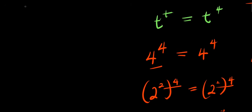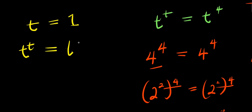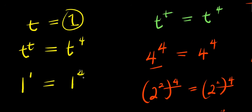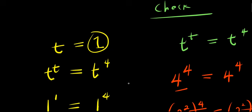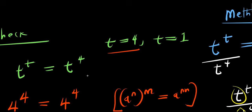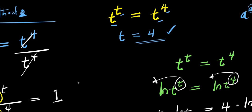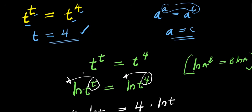Checking t equals 1: we have 1 to the power of 1 equals 1 to the power of 4. Now 1 to the power of 1 is 1, and 1 to the power of 4 is also 1, so left-hand side equals right-hand side. Both solutions satisfy the equation. The two solutions are t equals 4 and t equals 1. If you have any other solution, please drop it in the comment box. Thank you and see you again.